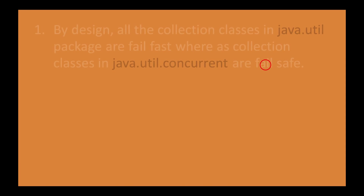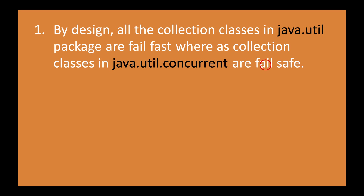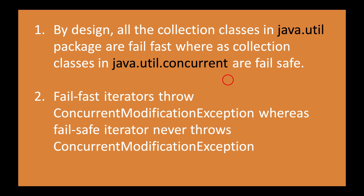You should have good knowledge on each topic. By design, all the collection classes in the java.util package are fail-fast, whereas collection classes in java.util.concurrent are fail-safe. Fail-fast iterators throw a ConcurrentModificationException, whereas fail-safe iterators never throw ConcurrentModificationException. The ConcurrentModificationException occurs when an object is trying to be modified concurrently when it is not permissible — when a thread tries to modify a collection object while it is being iterated by a fail-fast iterator.